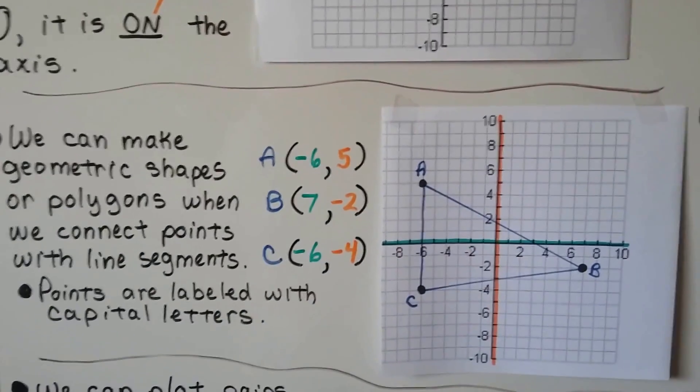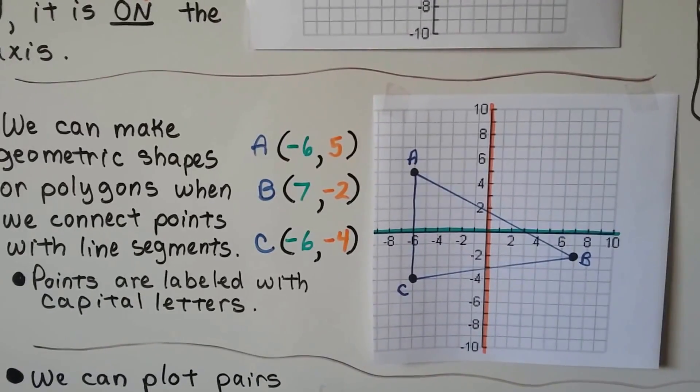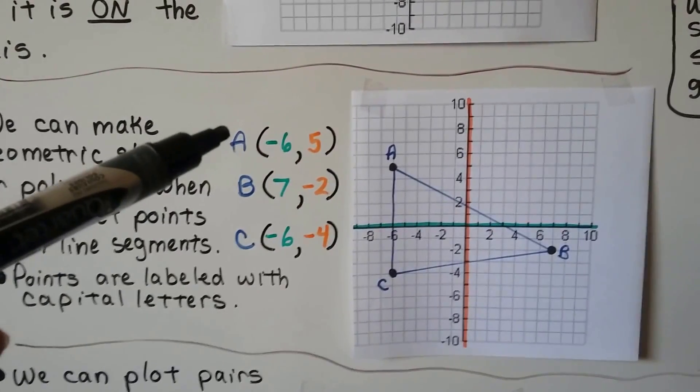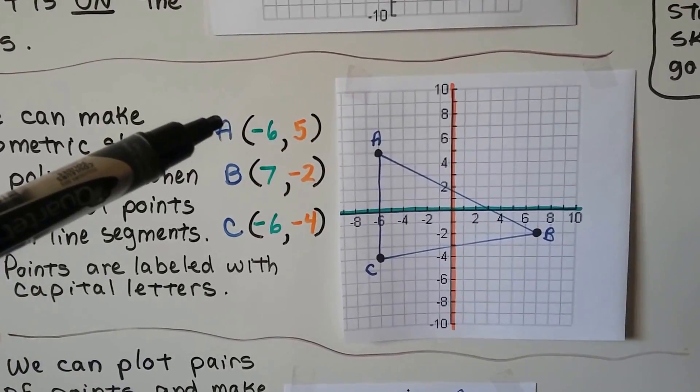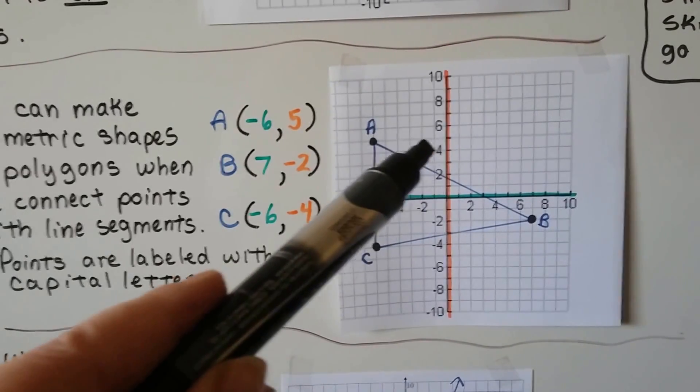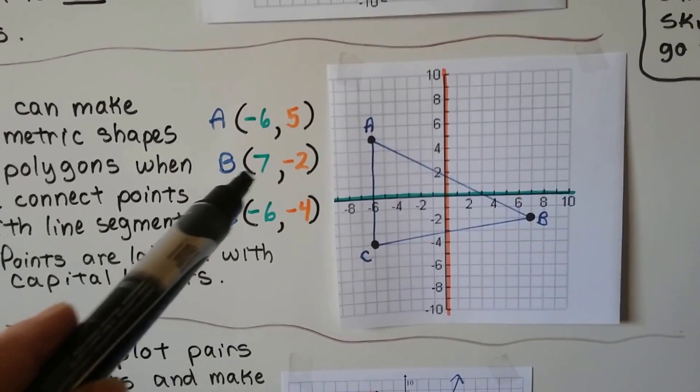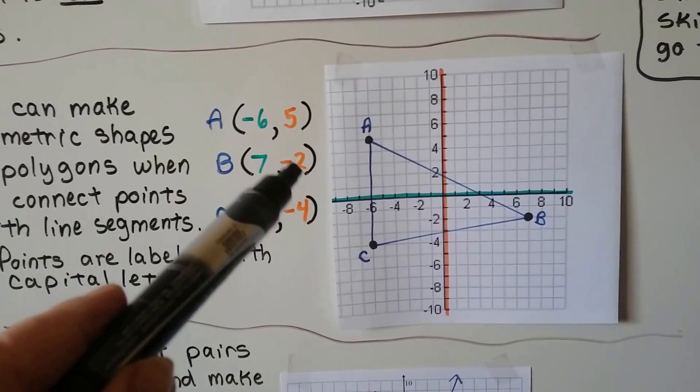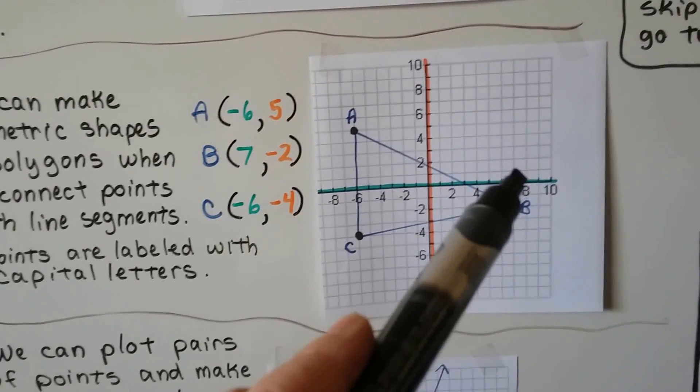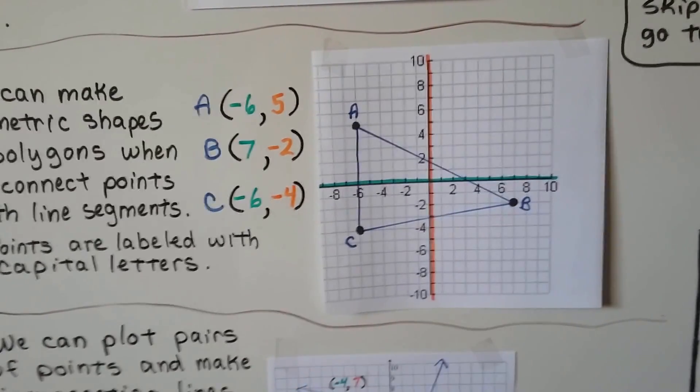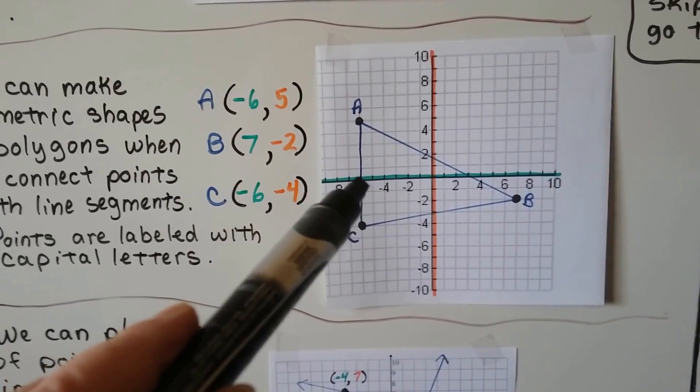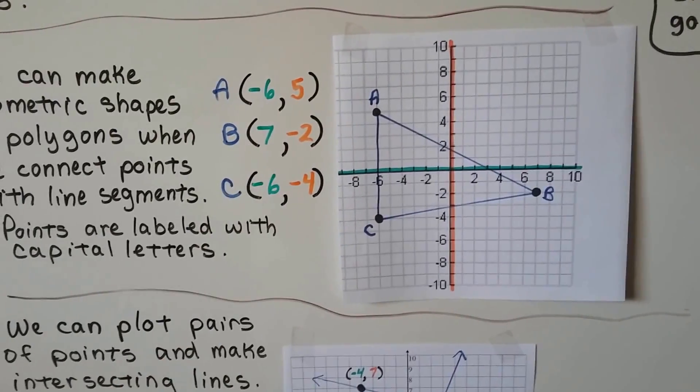We can make geometric shapes or polygons when we connect points with line segments. The points are labeled with capital letters. For the ordered pair negative 6 and 5, that would be point A. Here's negative 6 on the x and 5 on the y, it meets right there at A. For point 7 and negative 2, we find 7 on the x-axis, right here between 6 and 8, and negative 2 brings us down here, that's point B. Point C is at negative 6, negative 4.